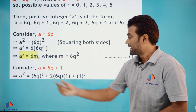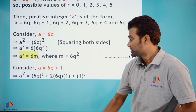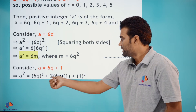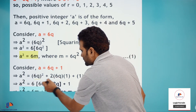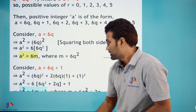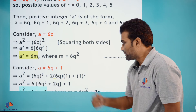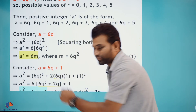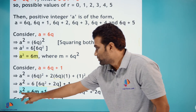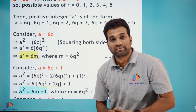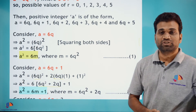Now consider a = 6q+1. Squaring both sides: a² = (6q+1)² = 36q² + 12q + 1 = 6(6q²+2q) + 1. You can see this is of the form 6(something) + 1. So a² = 6m+1, where m = 6q²+2q. Let this be equation (2).